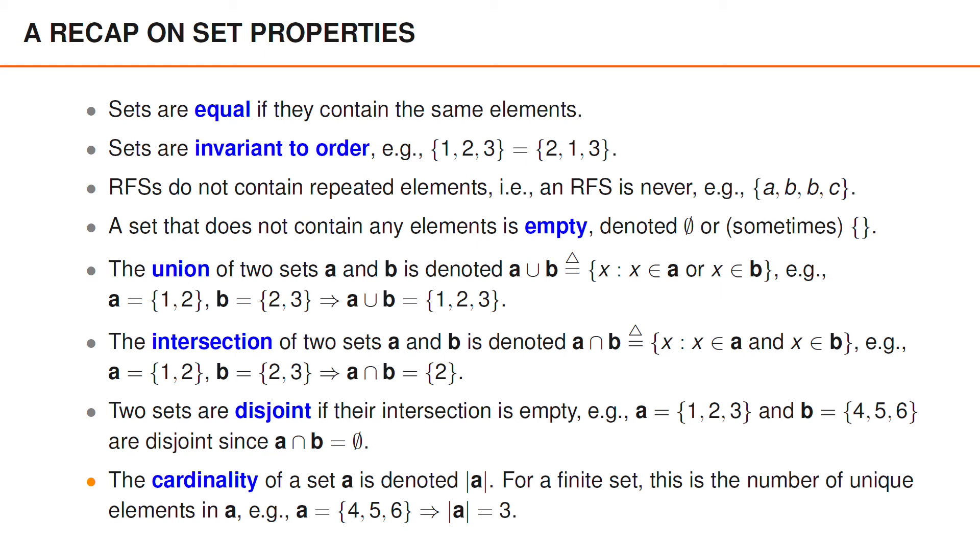Finally, the cardinality of a set A is denoted using one bar on each side of the set A. For finite sets, the cardinality is simply the number of unique elements in the set. For instance, if A contains 3 elements, 4, 5, and 6, the cardinality of A is 3. Note that we previously used an analogous notation for matrices.